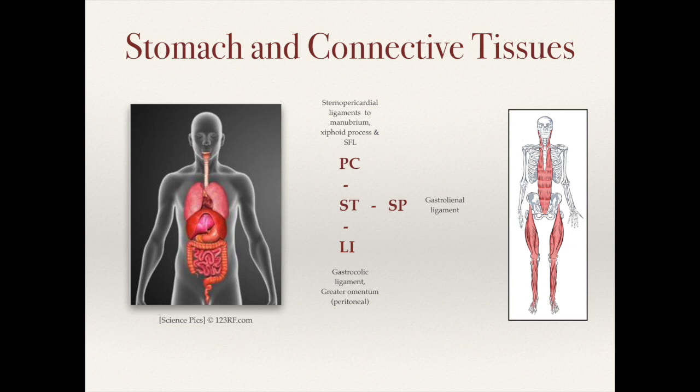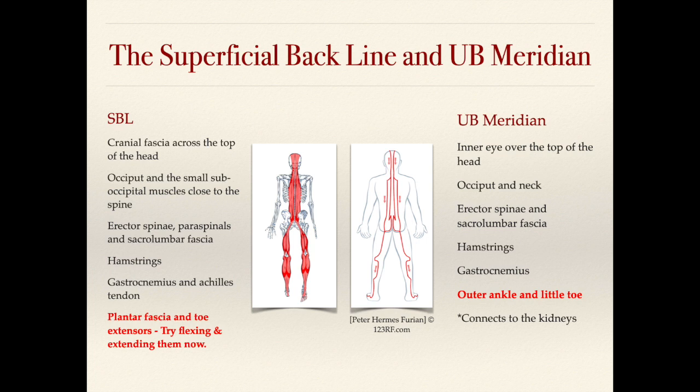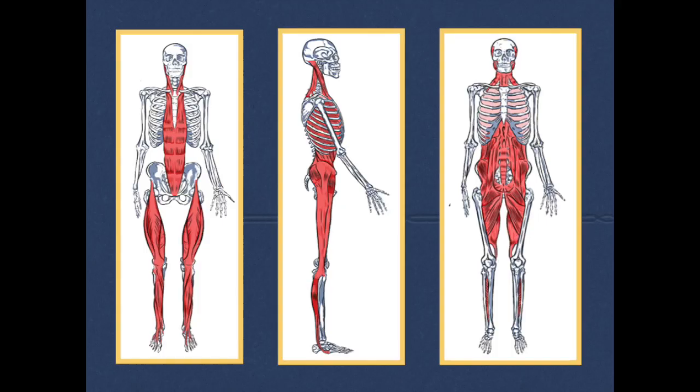The superficial back line includes muscle groups like the erector spinae, occipital fascia, posterior sacral fascia, hamstrings, calves, and Achilles tendon. It looks a lot like the urinary bladder meridian. We've got the superficial front line, the lateral line looking like the gallbladder meridian, and the deep front line, which is essentially a nice way to think about the leg yin channels.